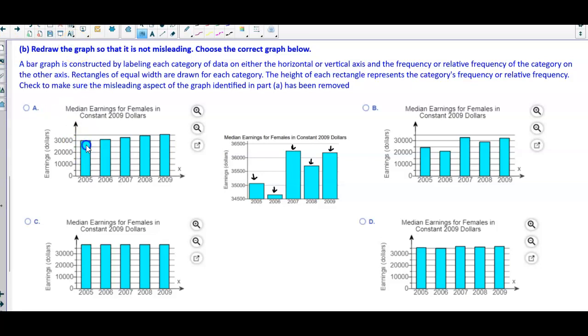If we take a look at our first graph, 2005 is right at 30,000. So we cannot redraw this graph in part A, so we have to not use that one.